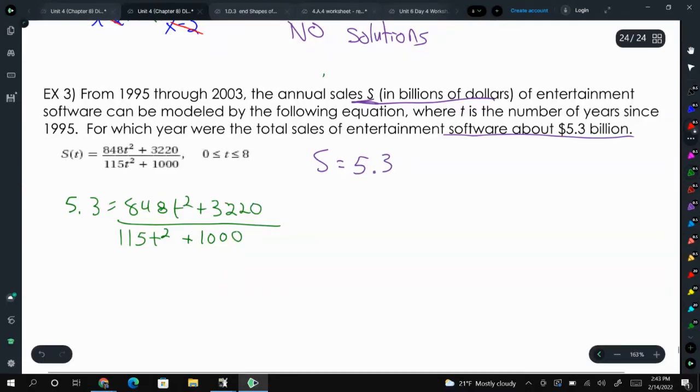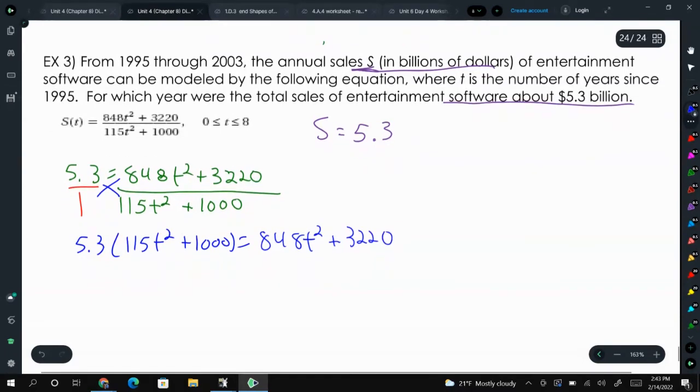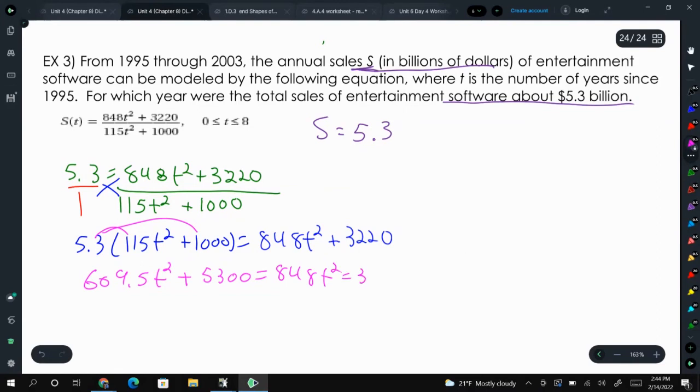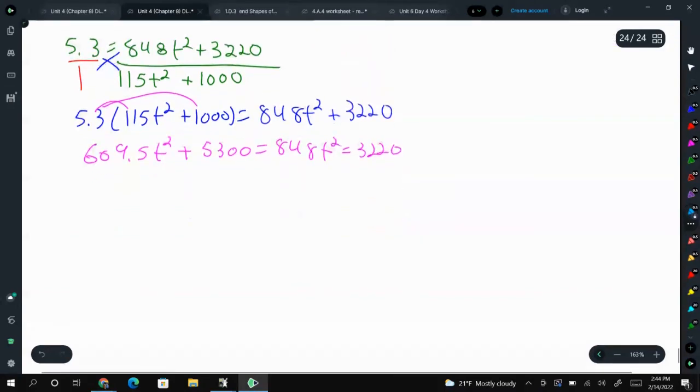So 5.3 equals 848 T squared plus 3,220 over 115 T squared plus 1,000. Now, we're going to solve this equation. If we write 5.3 as 5.3 over 1, now suddenly we can cross-multiply. And this is going to give us 5.3 times 115 T squared plus 1,000 equals 1 times 848 T squared. Well, if we're multiplying anything by 1, it just stays the same. We can distribute.